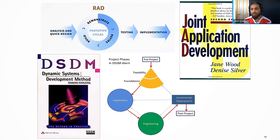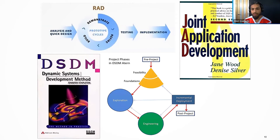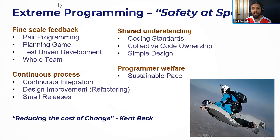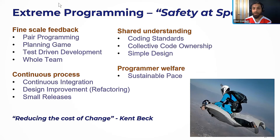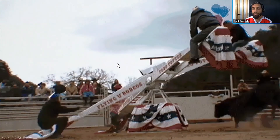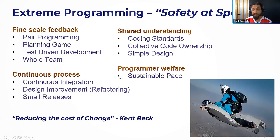This led to movements like DSDM, and a very popular one called Extreme Programming — probably the second most popular agile method. The ideas around continuous delivery were born from Extreme Programming, and most of the manifesto's ideas came from there too. Many people don't like the name because 'extreme' sounds crazy. But the philosophy behind Extreme Programming was not doing reckless things — it was about safety at speed, just like extreme sports.